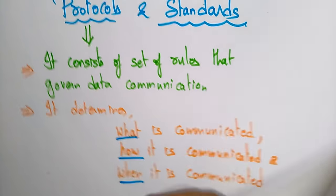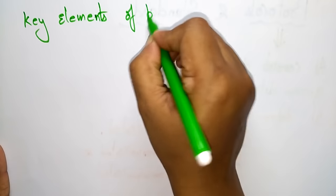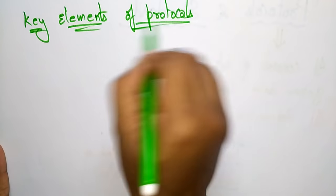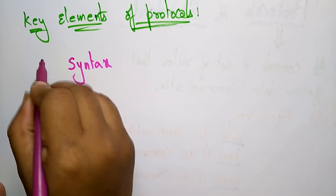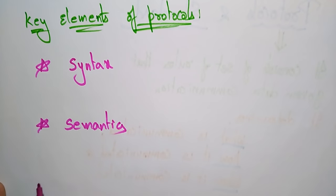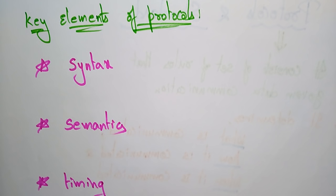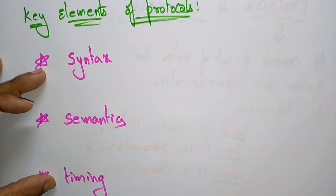Now let's see what the key elements present in protocols are. The three main key elements of protocols are: one is syntax, next is semantics, and next is timing. These are the three main elements involved in a protocol.